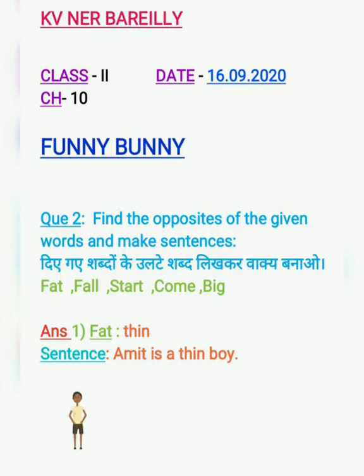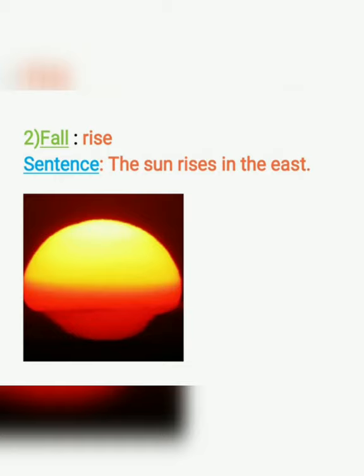Our next word is fall, یعنی کی گِرنا. پتوں سے پتیاں گرتی ہیں نا? The opposite of fall is rise, یعنی کی اُگنا یا بڑھنا. Sentence: The sun rises in the east. سورج پورب میں اُگتا ہے.